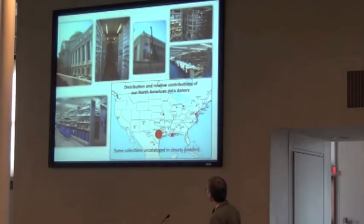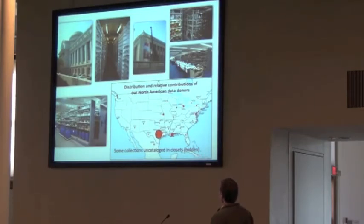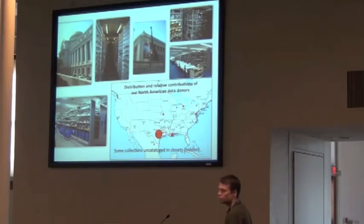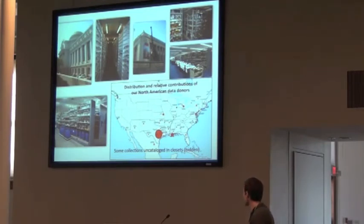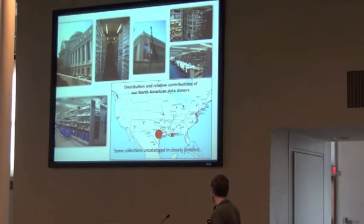Here's a map for the distribution and relative contributions of so-far European data donors. The biggest circle here is us. A&M is a big contributor as well. Some of these collections are really small collections, a little bigger than the classical specimens, and otherwise are basically hidden from research.